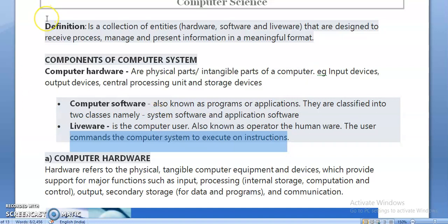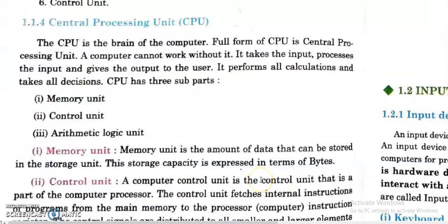So the components of a computer include all the physical or tangible parts which can be seen or touched, just like input devices, output devices, and central processing unit. Next, let us understand about the central processing unit, which is very commonly known as the CPU.